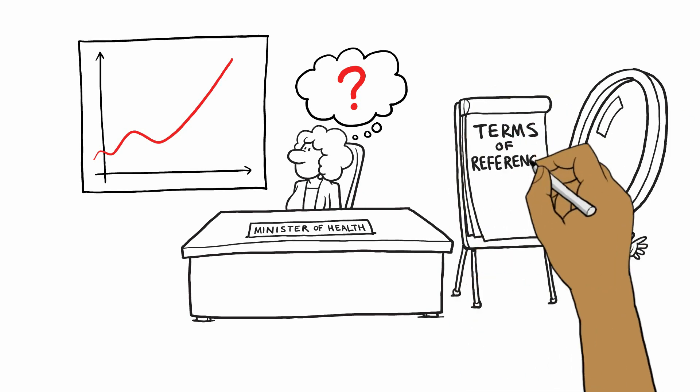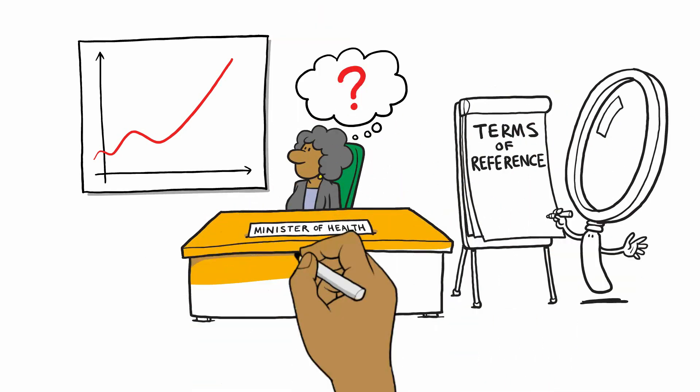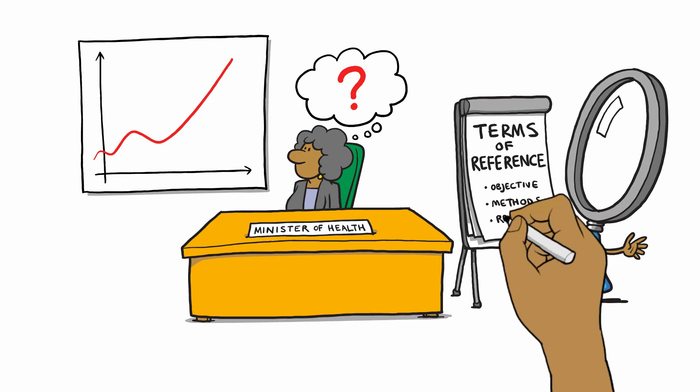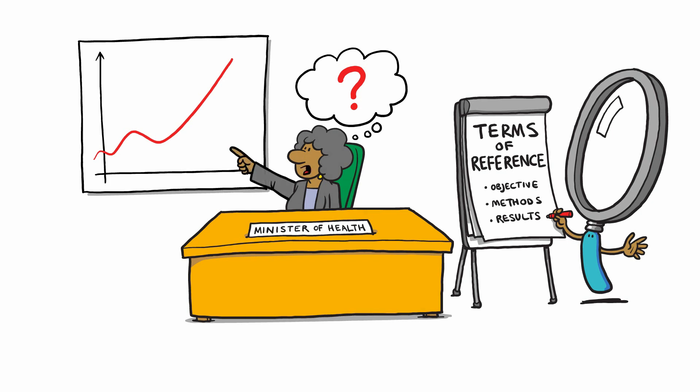For the study, terms of reference will be developed. This includes the question that will be answered or the objective, the sources of information and methodologies to be used, and most importantly, how the results will be used. If we cannot define how the information will be used or by whom, we won't do the study.